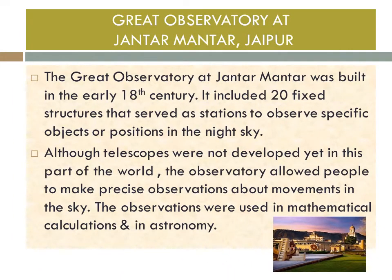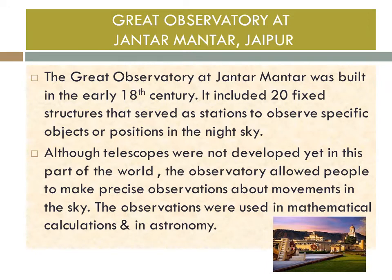The great observatory at Jantar Mantar, Jaipur — there is one at New Delhi also. It was built in the early 18th century and included 20 fixed structures that served as stations to observe specific objects or positions in the night sky. With the naked eye, one could go and see the night sky and the stars, as telescopes had not yet been developed in that part of the world. The observatory allowed people to make precise observations about movements in the sky regarding the stars, and these observations were used in mathematical calculations and in astronomy.